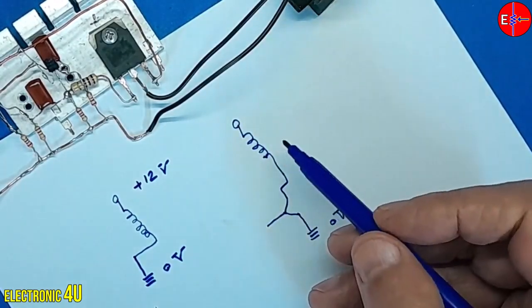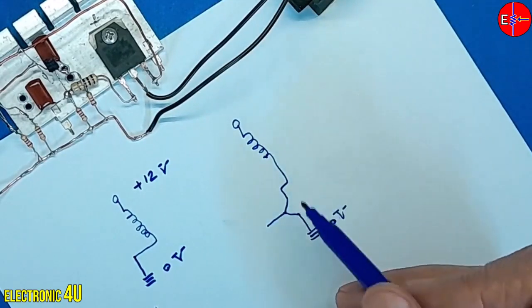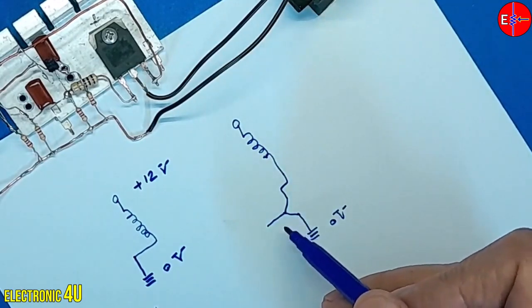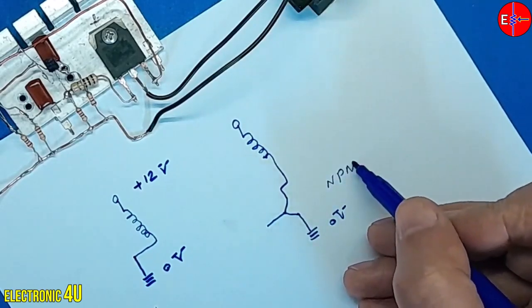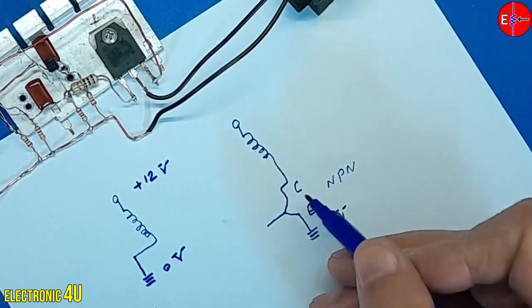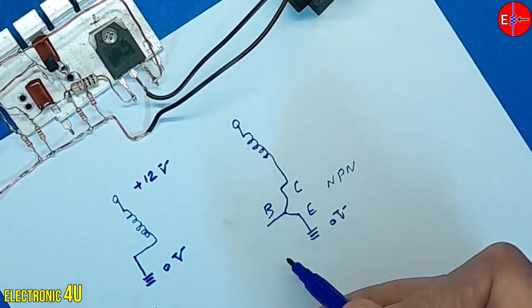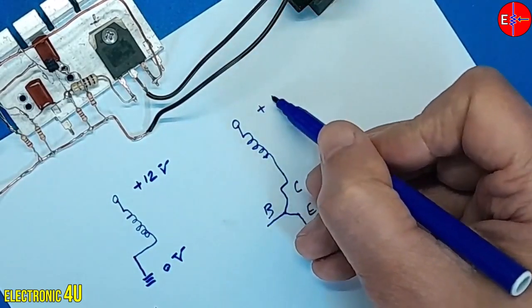The wire represents the primary winding of the transformer and a transistor is placed here. Let's assume it is an NPN transistor with collector, emitter and base terminals. Voltage is applied from the top, for example, 12 volts.